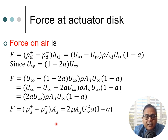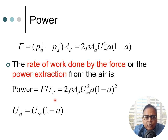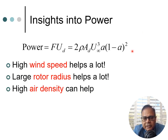Once we have the expression for force, we obtain power because power is the rate of work done — that is, force times the velocity of air at the rotor disk. Taking the force expression and multiplying by u_d, and remembering that u_d equals u-infinity times (1 minus a), we get the power expression. u-infinity is now cubed and (1 minus a) is squared. This equation for power tells us a great deal about wind turbine design.